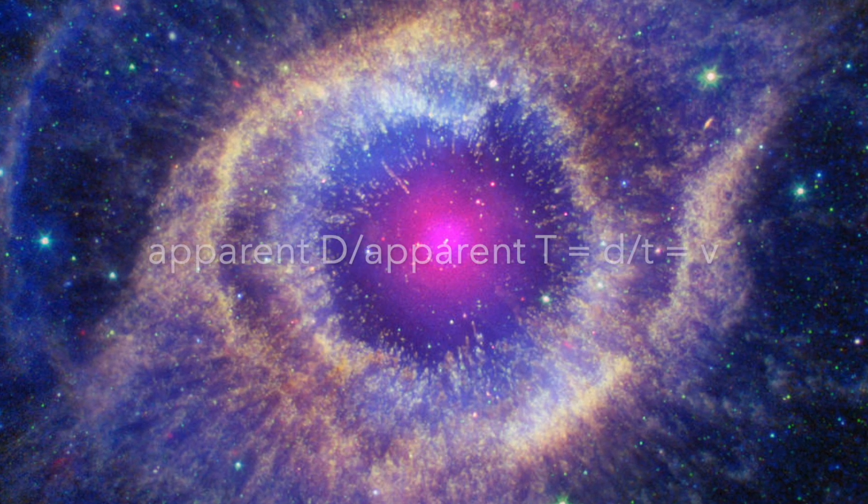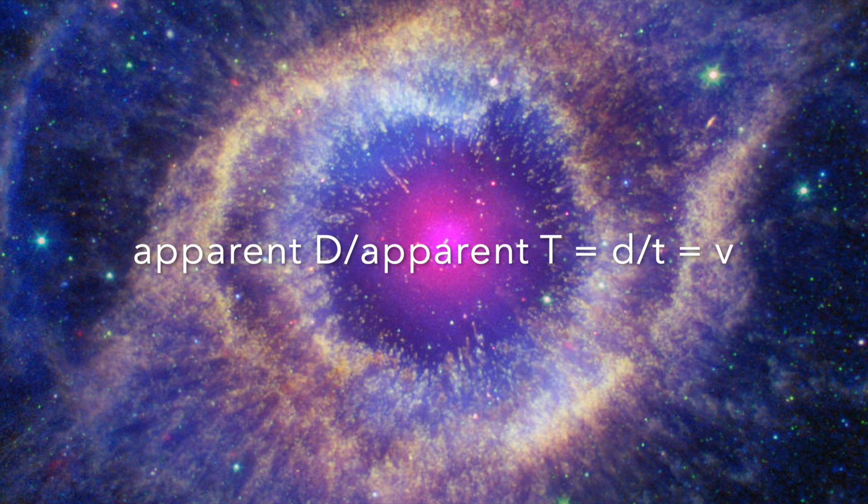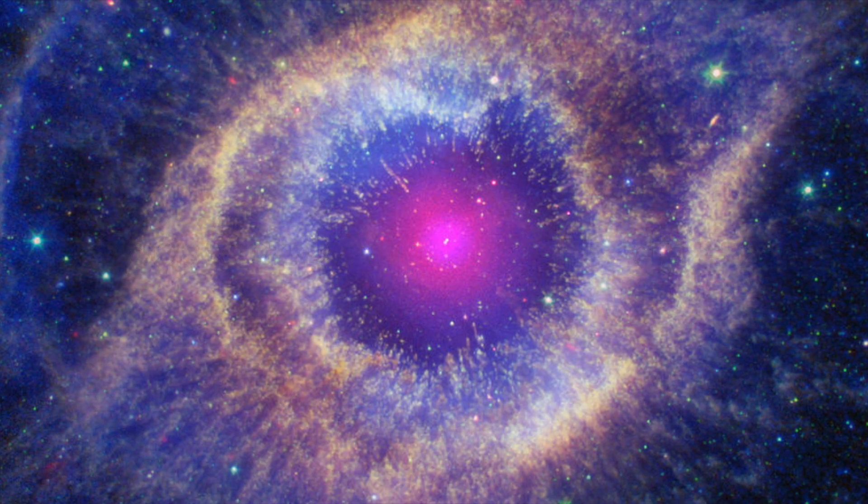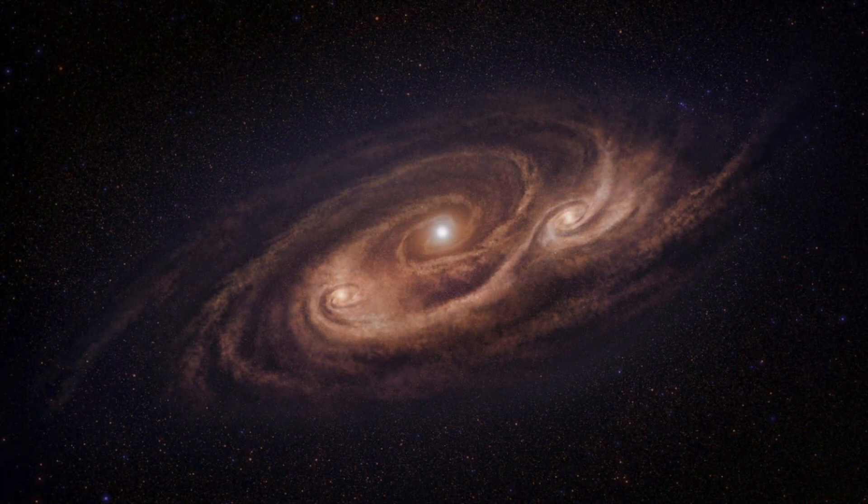And lastly, apparent distance divided by apparent time, which equals small v. What this implies is, the velocity of any apparently moving particle is actually undefined and can take on a value ranging from 0 to infinity.